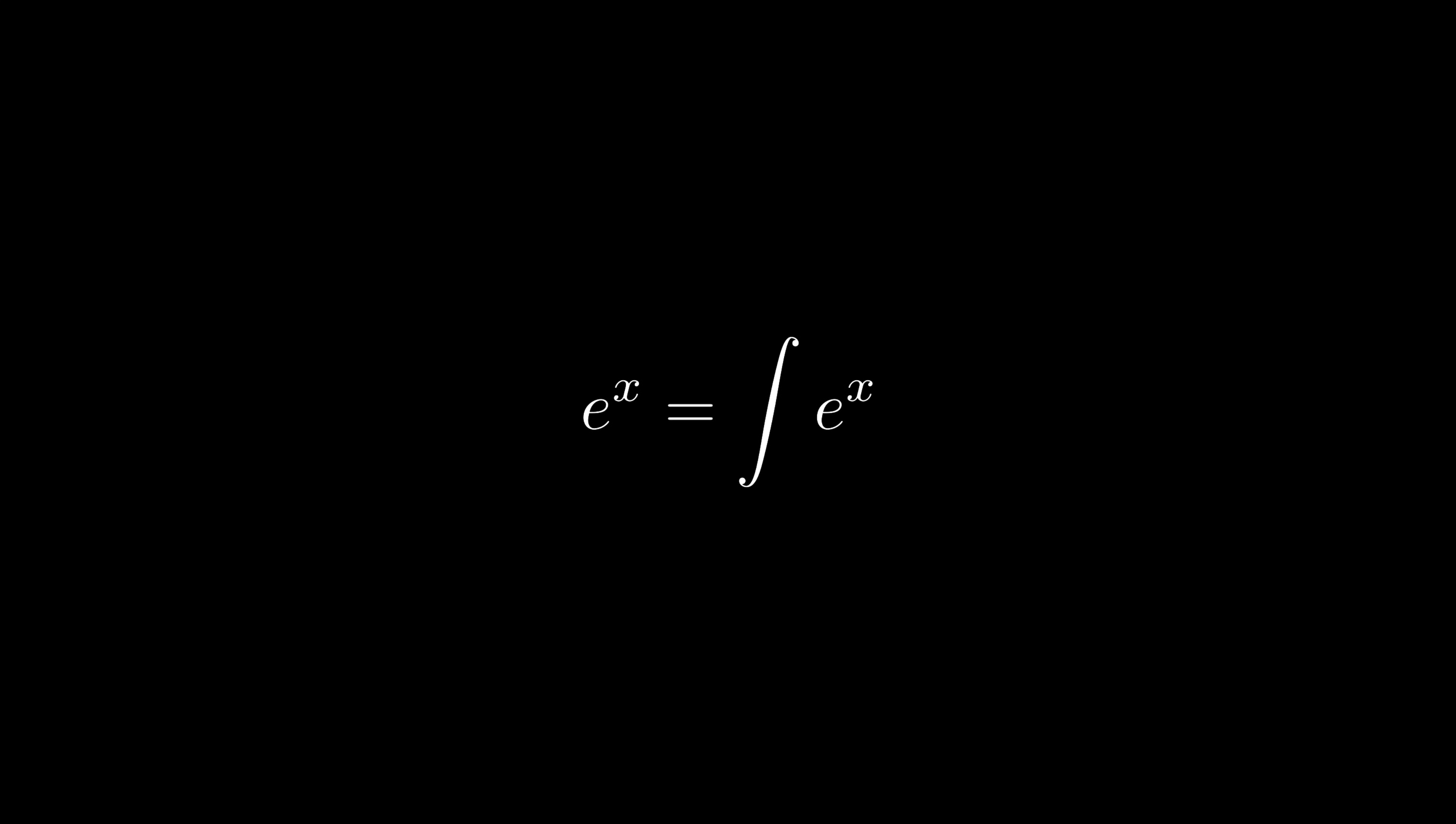Now I can move everything to the left-hand side. So I have one minus integration sign, whatever that means right now, times e^x is zero. And I'm also free to left multiply the inverse of one minus integration sign.